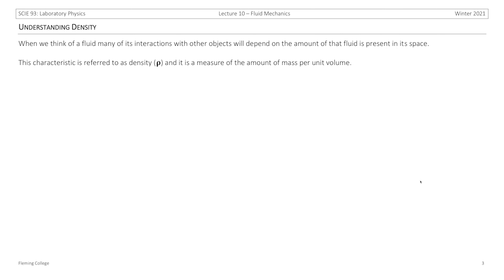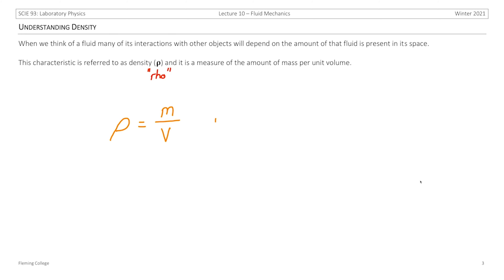When we think of a fluid, many of its interactions with other objects will depend on the amount of fluid present in the space it occupies — this is the volume of the fluid. This characteristic is referred to as density, represented with the symbol rho, and it measures the amount of mass per unit volume. The formula is rho equals mass divided by volume, with units of kilograms per meter cubed. Other conventions like grams per centimeter cubed exist, but we will stick with the SI standard units.